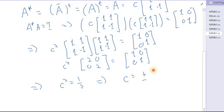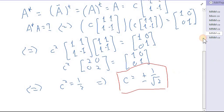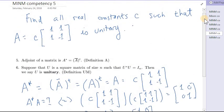So those are the answers. Now just to be complete, here in fact all of these implies are if and only ifs, so it goes backwards. C equals plus or minus 1 over square root of 2 are the only real solutions that make C times the matrix A to be unitary. All right, so that's it.